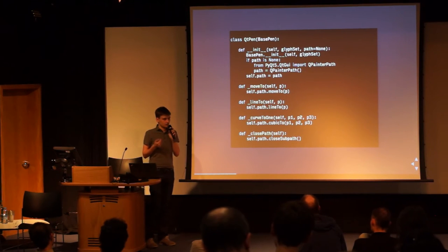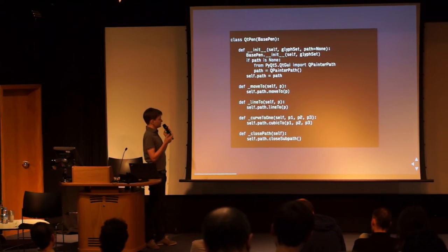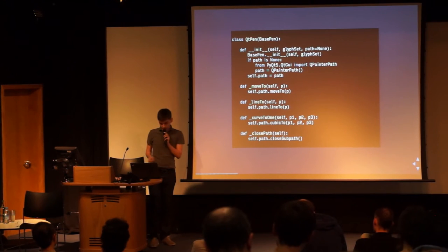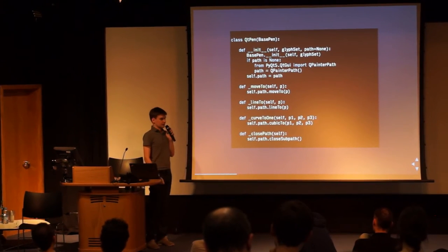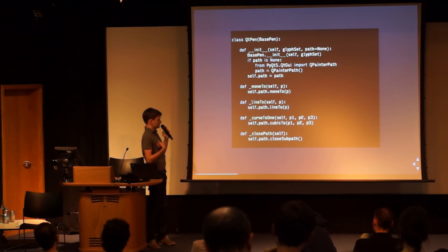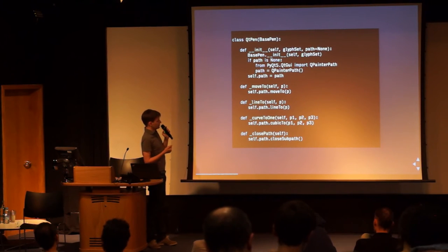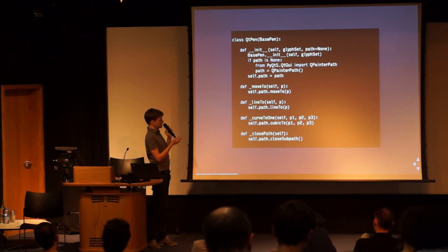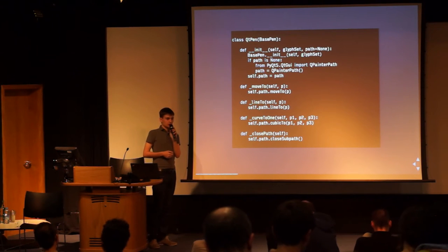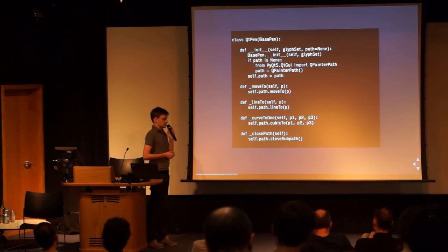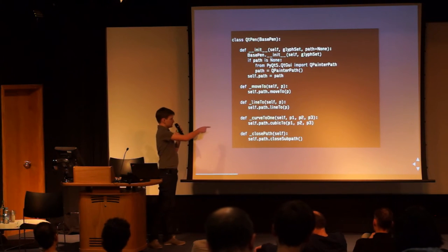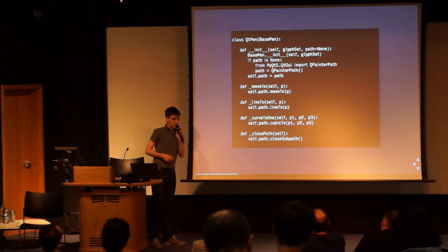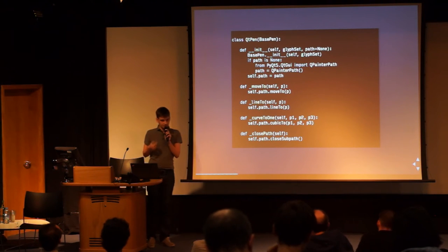Every different TrueType font goes through that pen first before being drawn on screen. You can do much more with the pen protocol because it's a way to stream your data, and you can also do modifications to the contour. For those who were at my workshop, we saw the remove-overlap pen, which simply calls the line-to function from the curve function. But you can do many elaborate things with pens.